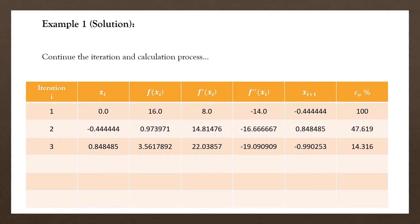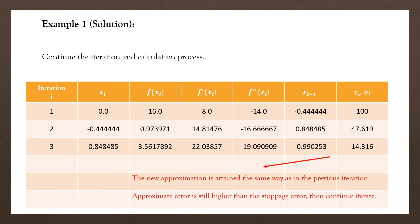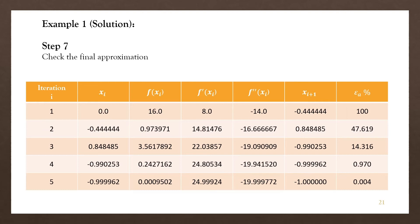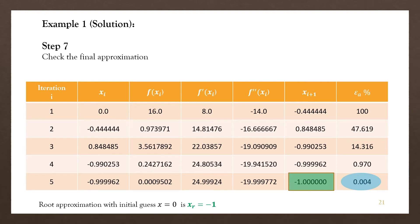We continue with the third iteration using the same calculation process as the previous iterations. The new approximation obtained is minus 0.990253, but the approximate error is still greater than the stoppage error. Continuing through the fourth and fifth iterations, the approximate error in the fifth iteration is already lower than 0.05 percent. The root approximation with initial guess x equal to 0 is x equal to minus 1.